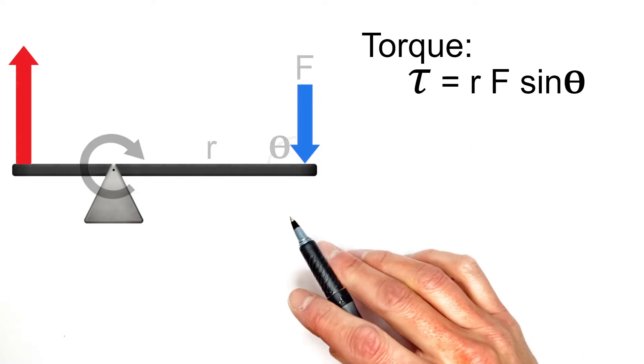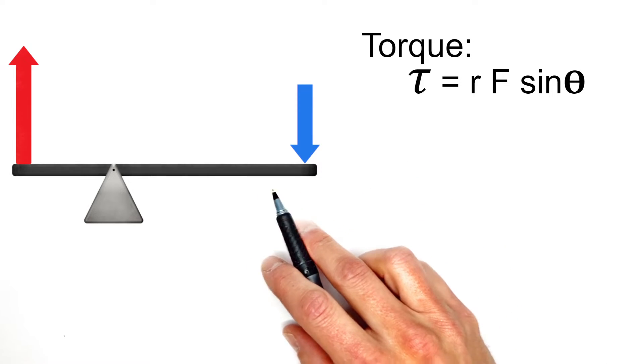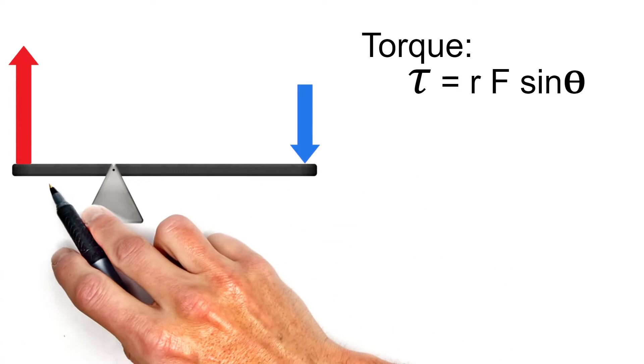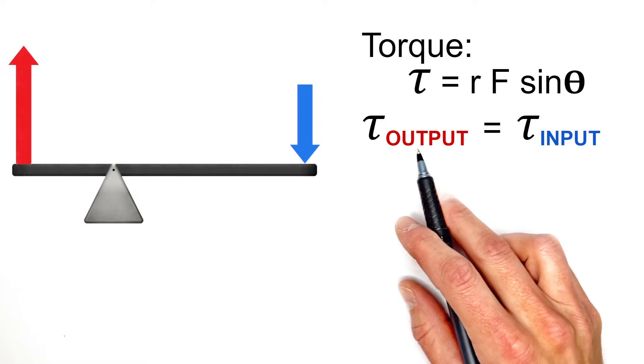And the whole idea behind a lever is that provided it's completely efficient, the torque from this input force over here gets transferred to the output side of the lever. Meaning, the torque into the lever equals the torque out.